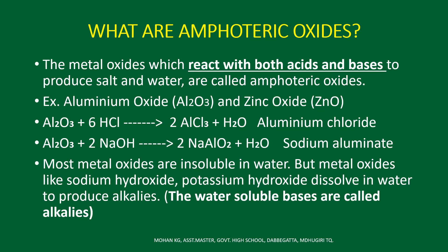A metal oxide which reacts with both acids and bases to produce the respective salt and water is called an amphoteric oxide. The best examples of amphoteric oxides are aluminum oxide and zinc oxide. These oxides show the properties of both acidic and basic substances.